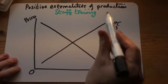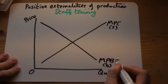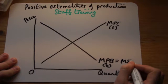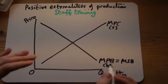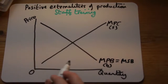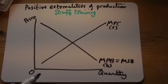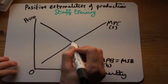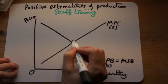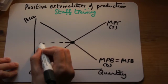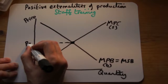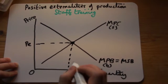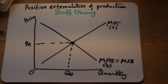Because we're looking at production here, we need to make the consumption lines equal — so we make social benefit equal to private benefit, because it's nothing to do with demand or consumption here, we're looking at production. We find the free market point where supply equals demand, or private cost equals private benefit. The price of staff training in the market is PE and the quantity supplied and consumed is QE.